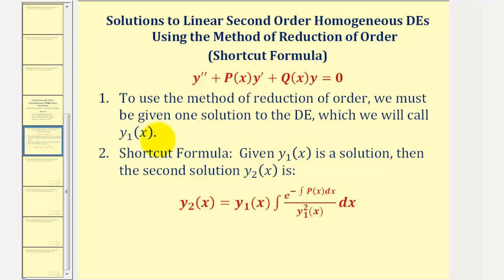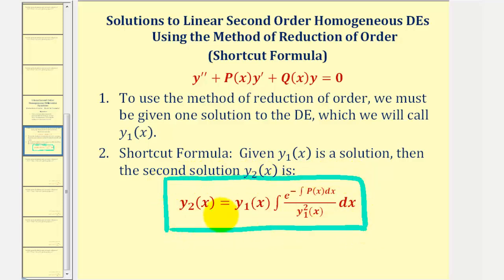If our differential equation fits this form and we're given y one of x, then we can use the shortcut formula to find our second solution, y sub two of x. So y sub two of x will be equal to the given solution times this integral here. Let's take a look at an example.